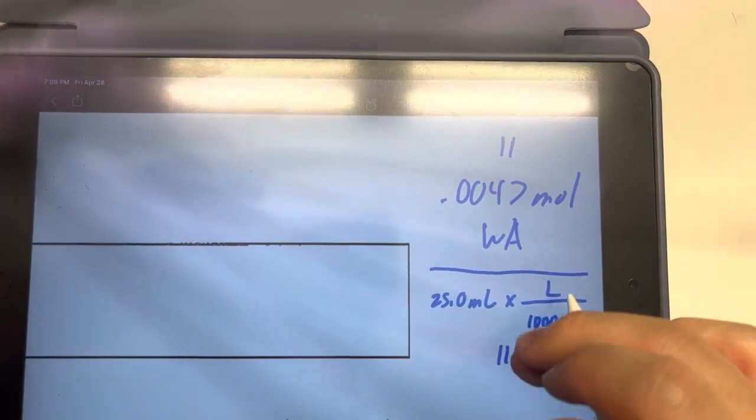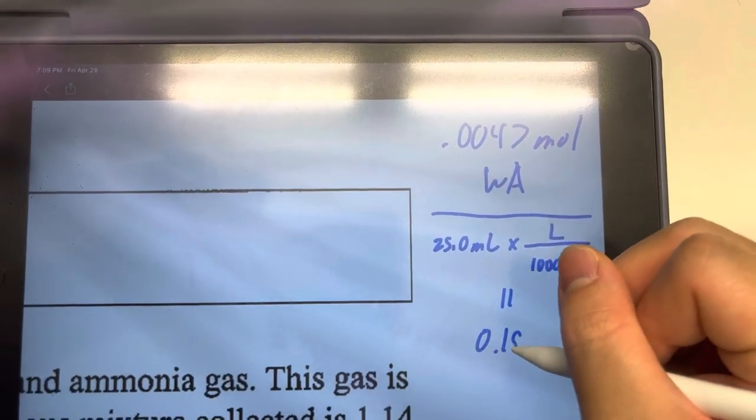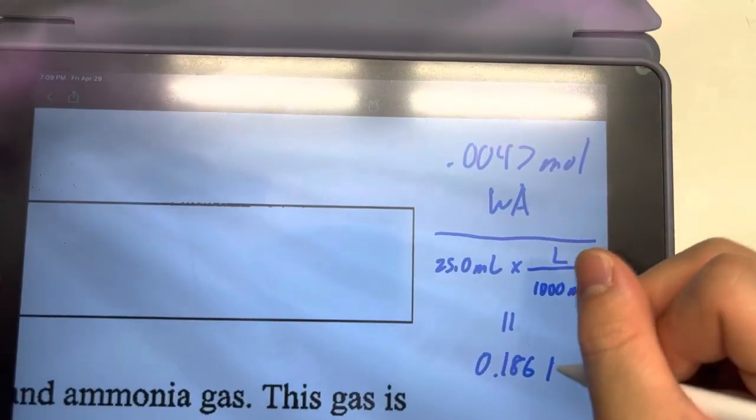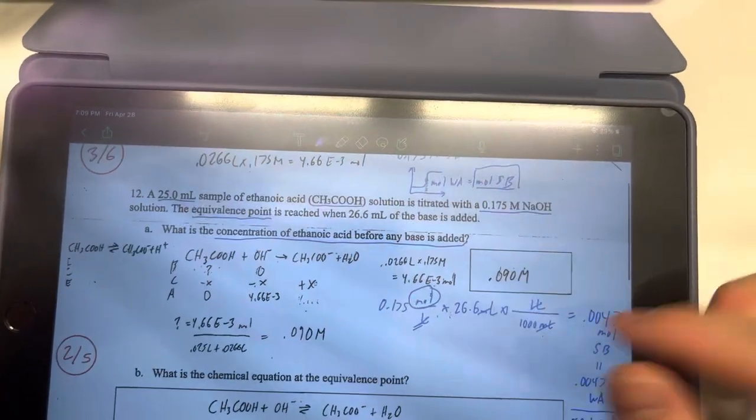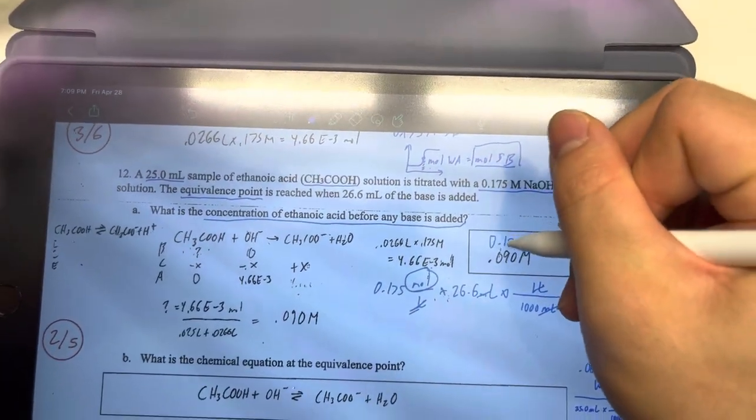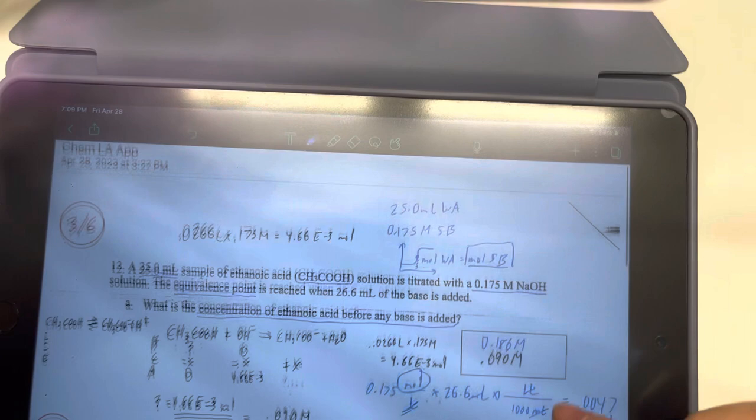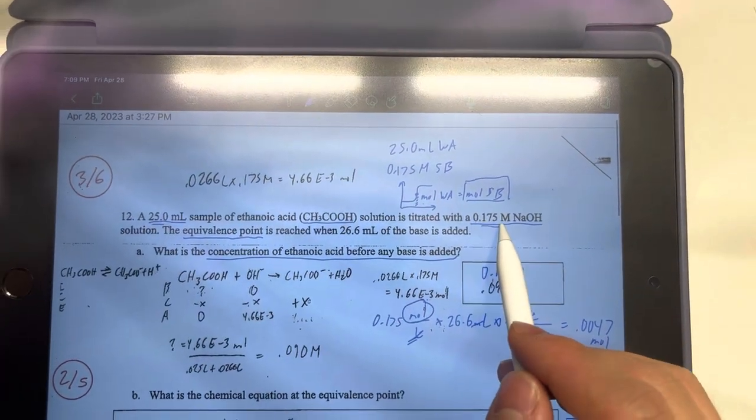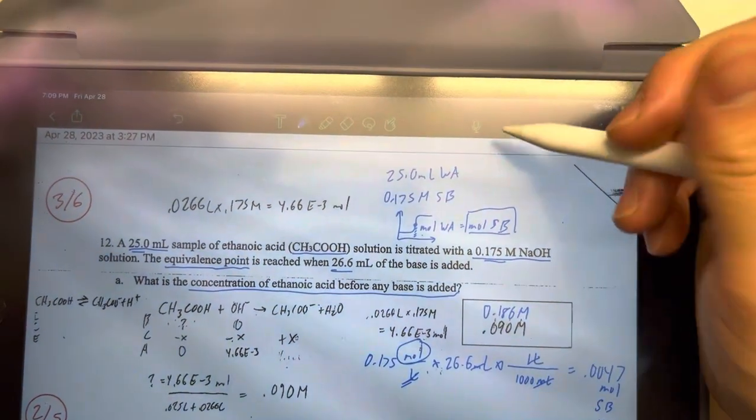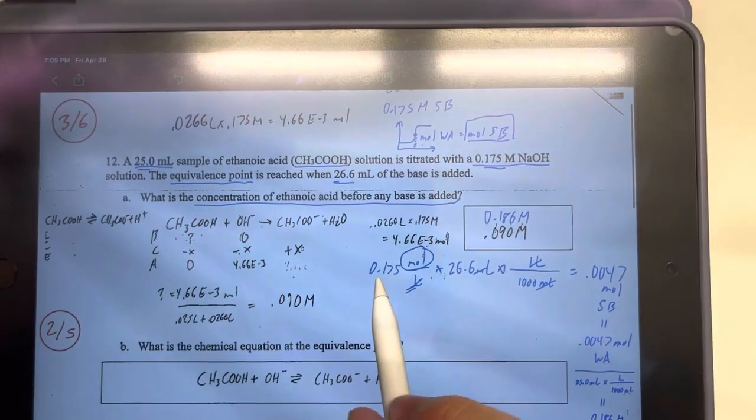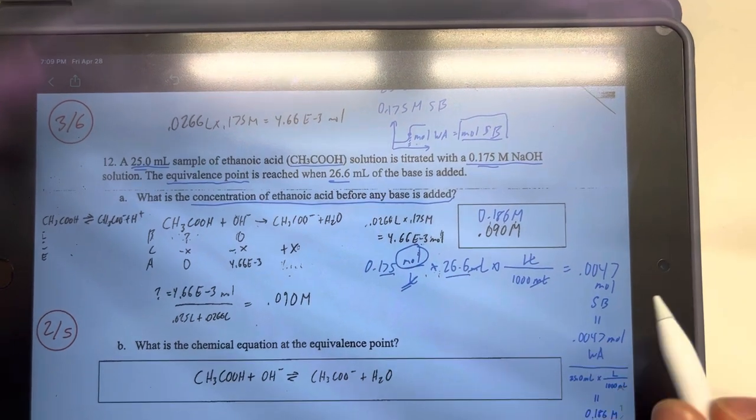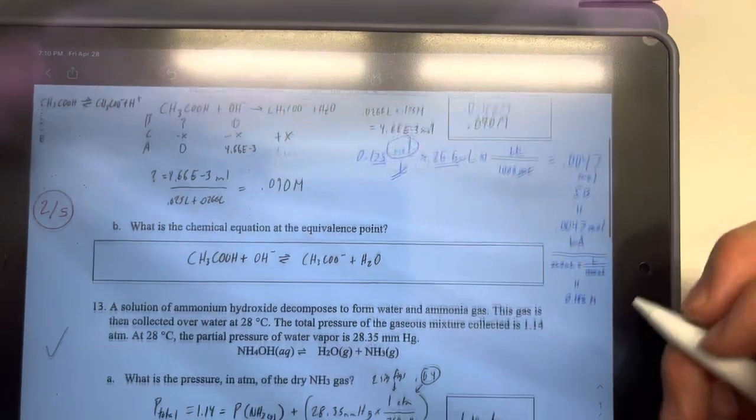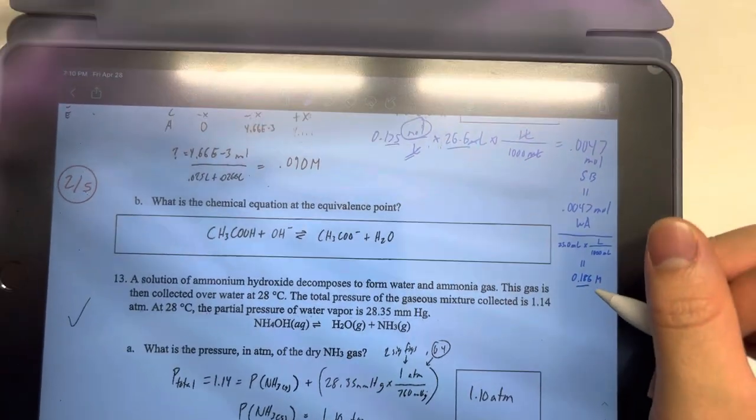And that will give us 0.186 moles. So the last thing I would do is just to double check sig figs at the end of the question. So we're given three sig figs here, three sig figs here, three sig figs here. And all of our calculations, as you can see here, three sig figs multiplying three sig figs, that's an exact value. So we should end up with three sig figs at the very end, 0.186.